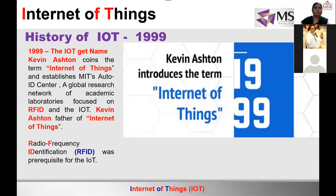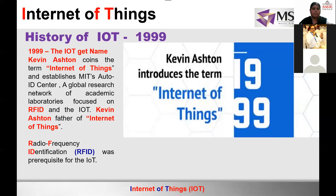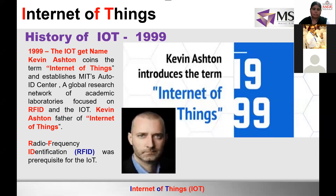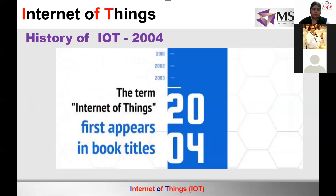The actual name 'Internet of Things' was given by Kevin Ashton in 1999, when he was working with RFID — Radio Frequency Identification. In the Ola app example, both devices are connected via radio frequency and each device has a unique identification, which is your IP address. Kevin Ashton is also called the father of IoT. The name first appeared in a book in 2004 — almost 22 years after 1982 for things to get identified.